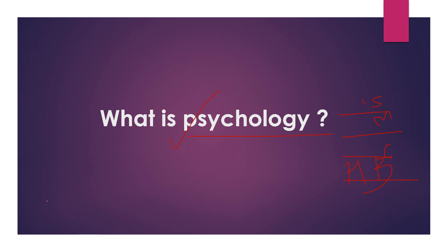In the evolution there have been many developments, and definitions have been discussed. Wilhelm Wundt is the person who is called the father of psychology. He is the first person who defined psychology as the science of behavior. So he is called the father of psychology — Wilhelm Wundt.